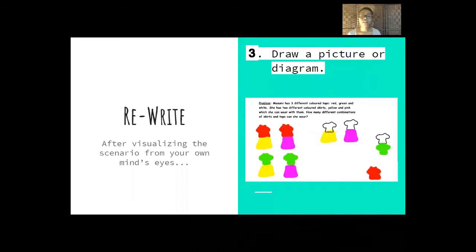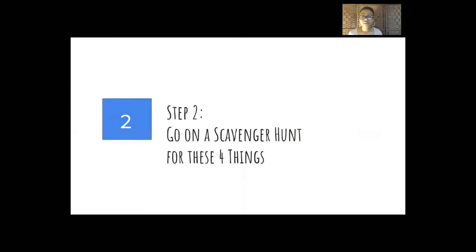The fourth thing you're going to do when you're rewriting is to draw a picture or diagram. Whatever you rewrote, when you rewrote it in your own words, you were trying to visualize and put yourself in the position of the person or the situation in the word problem, it'd be good to draw you a picture of what you see in your mind. And in this image here, you'll see a problem that says Masumi has three different colored tops and she has two different colored skirts. Whoever is doing this problem is trying to match up the different tops with the different colored skirts to see how many combinations she can get.